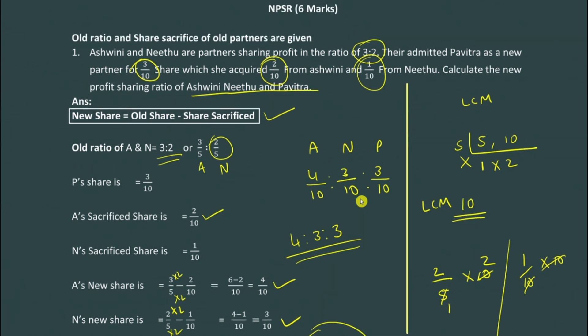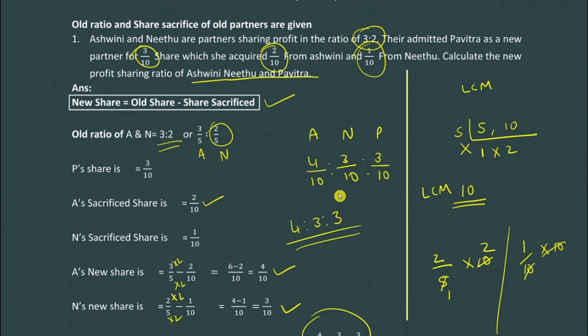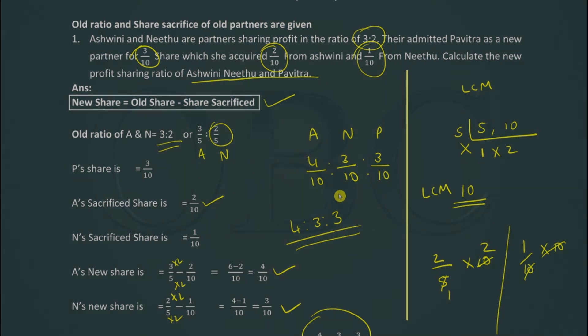Make note: whenever the question gives old profit sharing ratio and share sacrificed of old partners, you have to follow this method. If they give sacrifice ratio instead, you have to use another method which will be covered in the next problem. That's it for this video - if you liked it, hit like and share with your friends. See you in the next video!